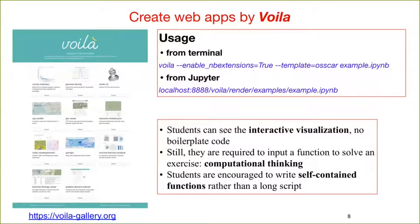You can find many web applications at voila-gallery.org. There are two ways to run Voila. When using Voila as a standalone application, type Voila in the terminal. Enable underscore nb extensions allows you to show the custom widgets. One can also choose the templates by using the template argument. Here, one can see that we use our OSCAR template. Voila can also be run as a Jupyter server extension. By calling slash voila slash render slash inside the URL after Jupyter port and before the path for the notebook, it will render the notebook and show the web app.